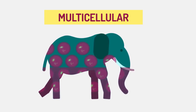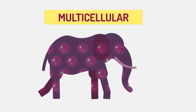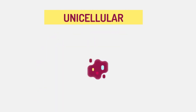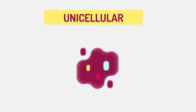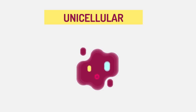Multicellular organisms have long lifespans because individual cells have a relatively small workload, whereas the hard-working single cell of a unicellular organism has such a heavy workload that it can only maintain a very short lifespan.